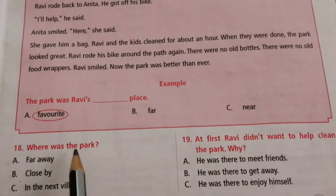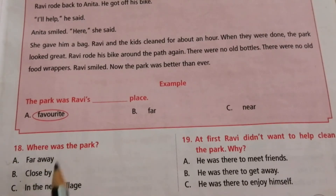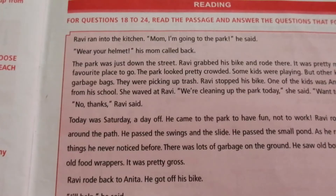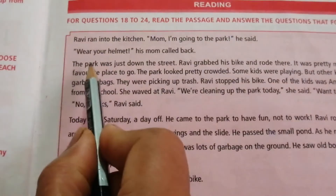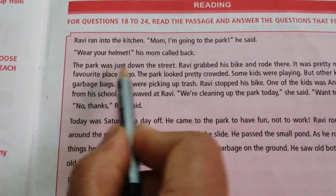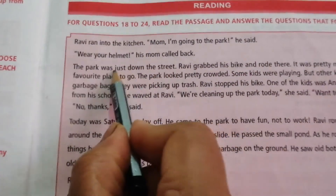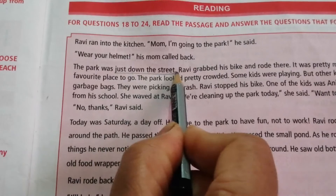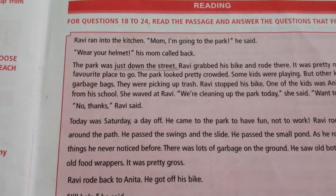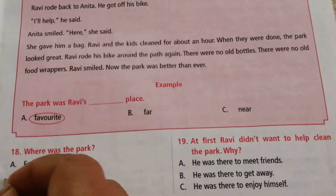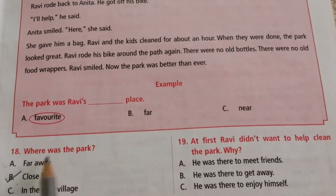Question 18: Where was the park? Options are far away, close by, in the next village. The answer is from the passage: 'The park was just down the street,' which means close by. The answer is B — close by.